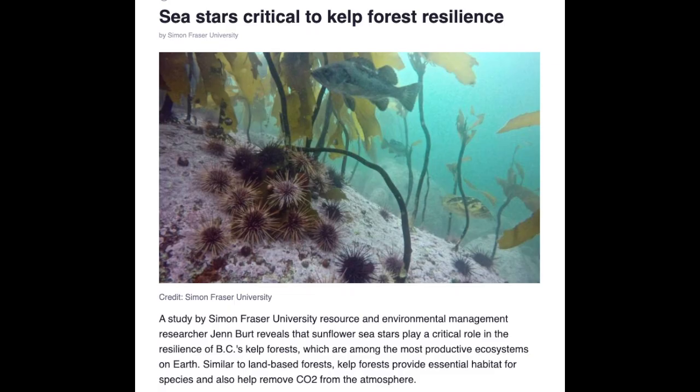But the loss of a key urchin predator, the sunflower sea star, due to sea star wasting disease, left the kelp forests of Northern California without any predators of sea urchins, which are voracious grazers of kelp.